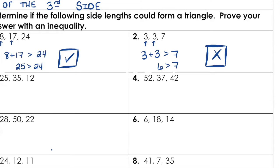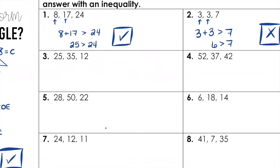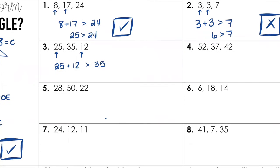Number three. Our two smaller sides are 12 and 25. So 12 plus 25 must be greater than 35. 12 plus 25 is 37. Is 37 greater than 35? Yes — so we've got ourselves a triangle.